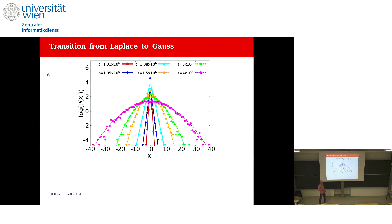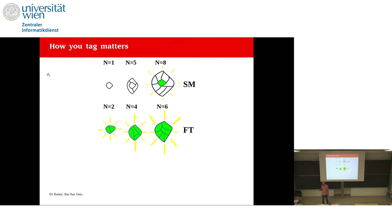Based on simulations, the distribution of particle sizes more or less follows the predicted laws. For the Zimm and Rouse models we see a very wide distribution, while for the Arrhenius case it is a very narrow distribution. The intuitive reason for the narrow Arrhenius distribution is that large molecules have exponentially small diffusion constants, so they barely move, cannot meet, and tend to break apart — suppressing large-size fluctuations.